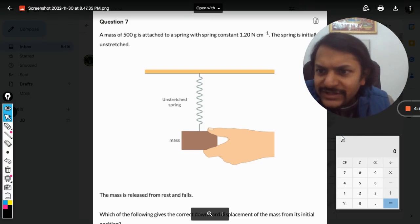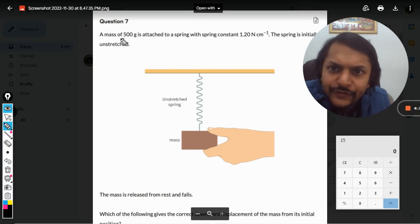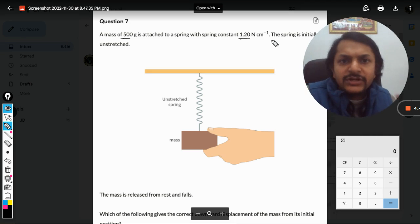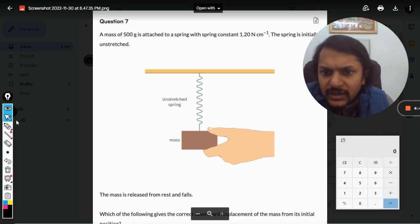Okay, dear students, let us see what is there in this question. A mass of 500 grams, that is half a kilogram, is attached to a spring with spring constant 1.2 Newton per centimeter. The spring is initially unstretched.